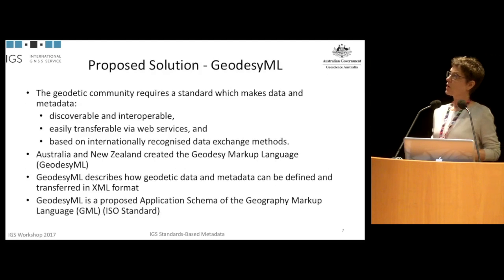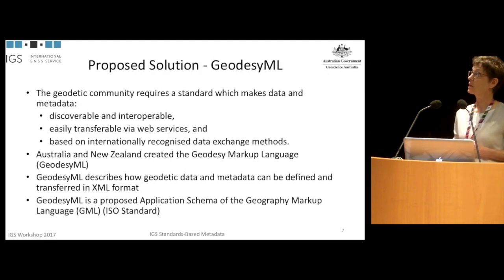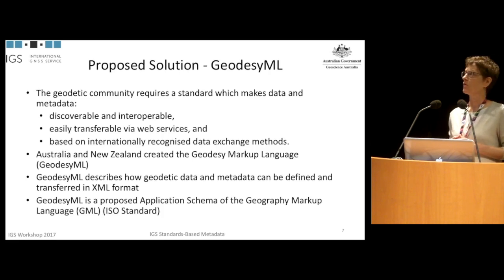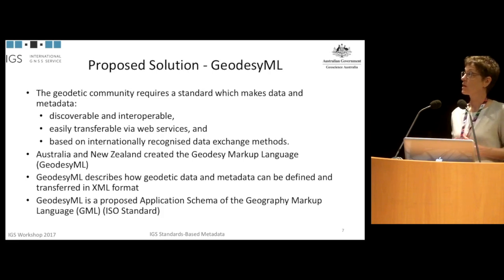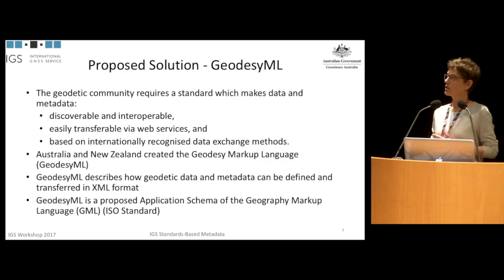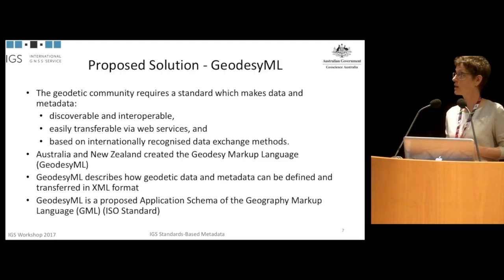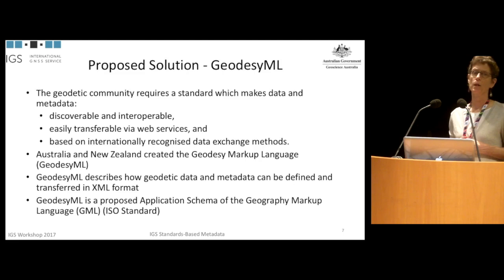The proposal was to create this GeodesyML schema, which would make Geodesy metadata discoverable and interoperable and easily transferable over the internet, placing it within internationally recognized data exchange methods. The Australia and New Zealand groups created the Geodesy Markup Language, GeodesyML, which describes geodetic data and metadata defined and transferred in XML format, and it's currently a proposed application schema of the international standard GML.